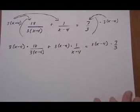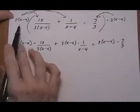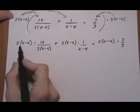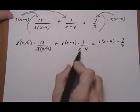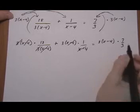Alright, now it's pretty clear to see what cancels and we're not going to end up losing the LCD because we cancelled it with just one of the terms. So here the 3x minus 4 both cancel. Here the x minus 4's cancel. And here the 3's cancel.